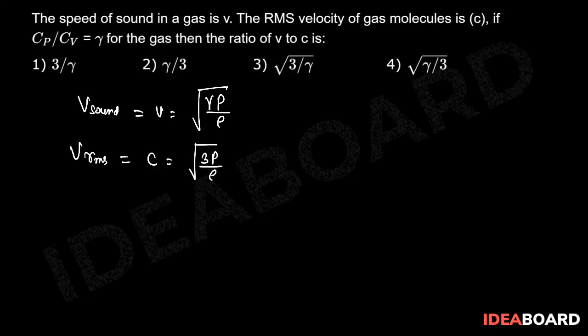Taking the ratio, we can write v_rms divided by v_sound, and that will be equal to under root 3 p by rho divided by under root gamma p by rho.